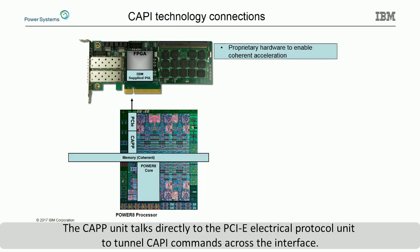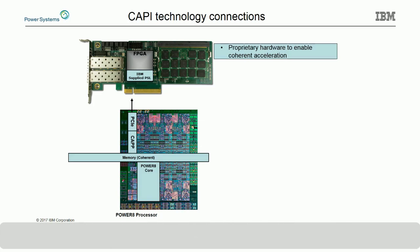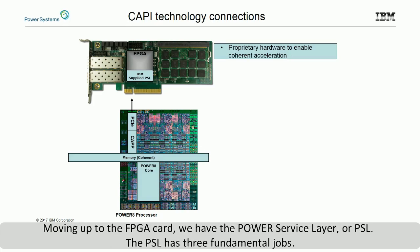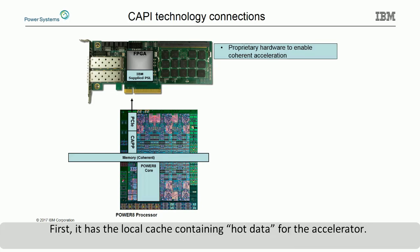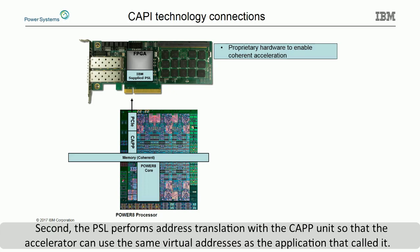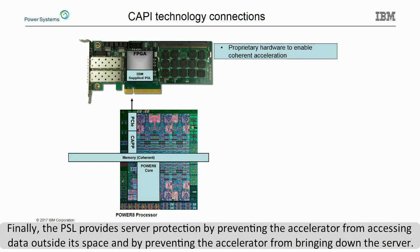Moving up to the FPGA card, we have the Power Service Layer, or PSL. The PSL has three fundamental jobs. First, it has the local cache containing hot data for the accelerator. Second, the PSL performs address translation with the CAPI unit so that the accelerator can use the same virtual addresses as the application that called it. Finally, the PSL provides server protection by preventing the accelerator from accessing data outside its space and by preventing the accelerator from bringing down the server.